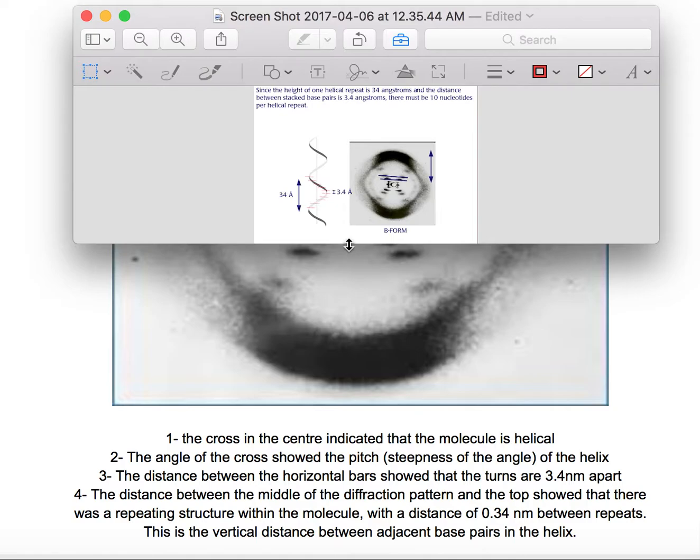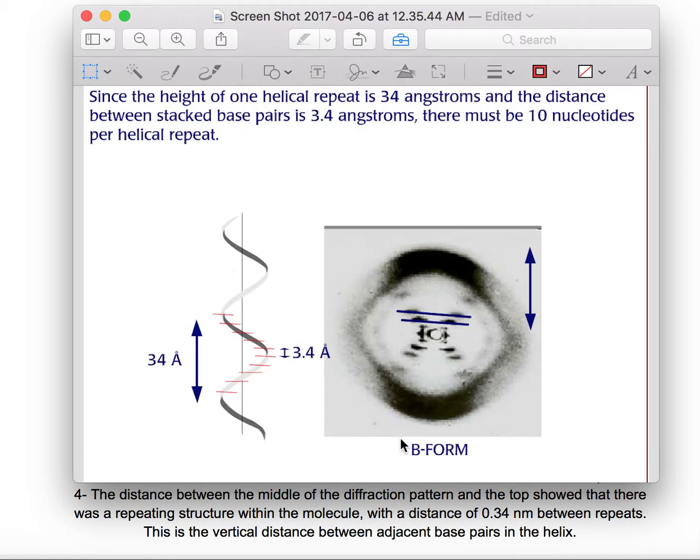This picture is also going to show it clearly. We said the height of one helical repeat is 3.4 nanometers. This is angstroms, a different measure that we're not going to get into. It's not required from IB students.